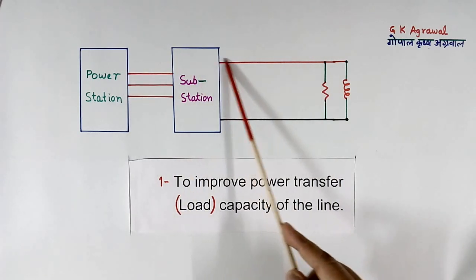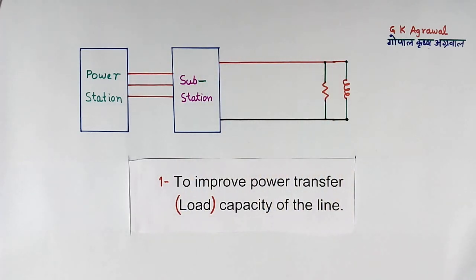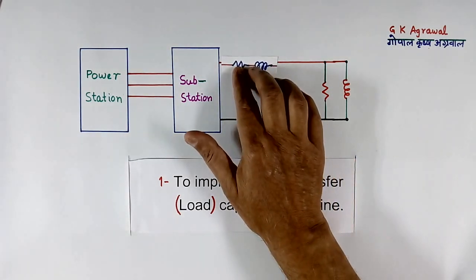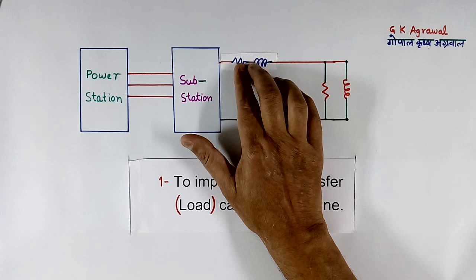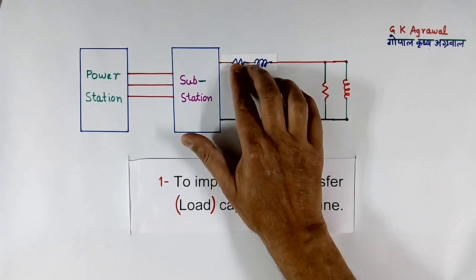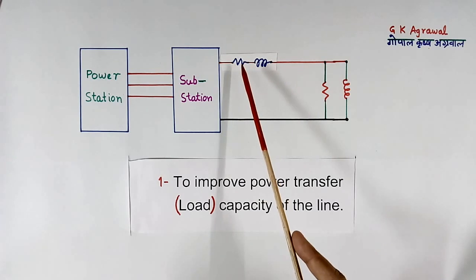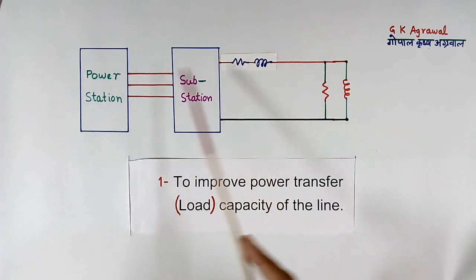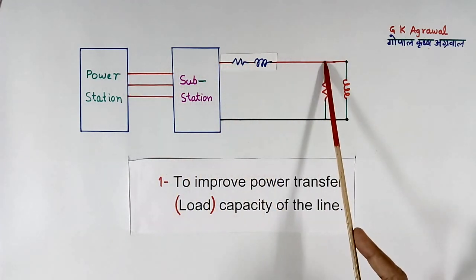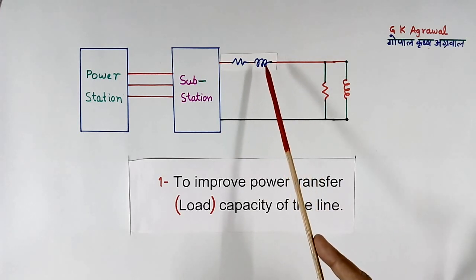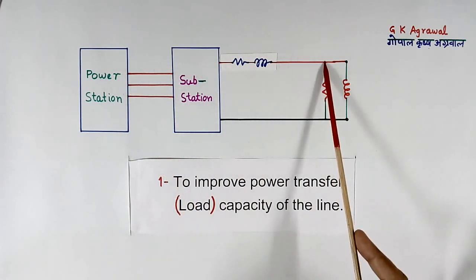This line has resistance and inductance both. That I will show here. This resistance I have shown, which is equal to full resistance from here to here. Similarly, this inductance represents the inductance of full line.